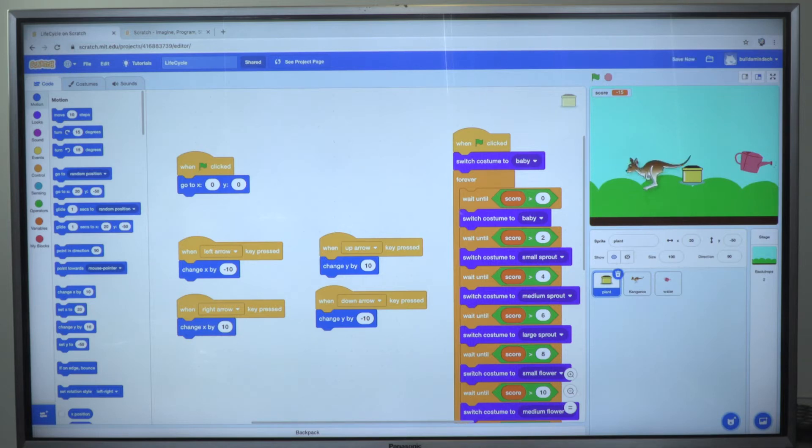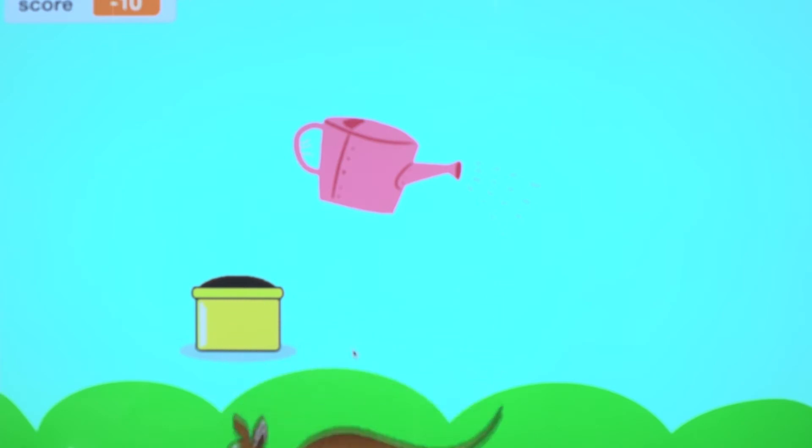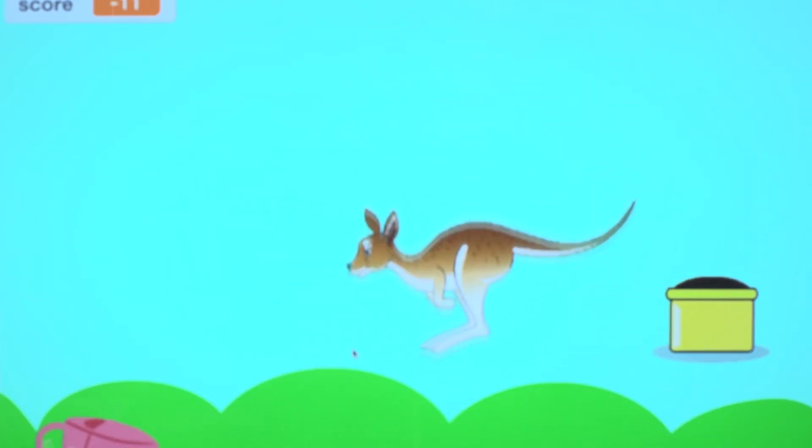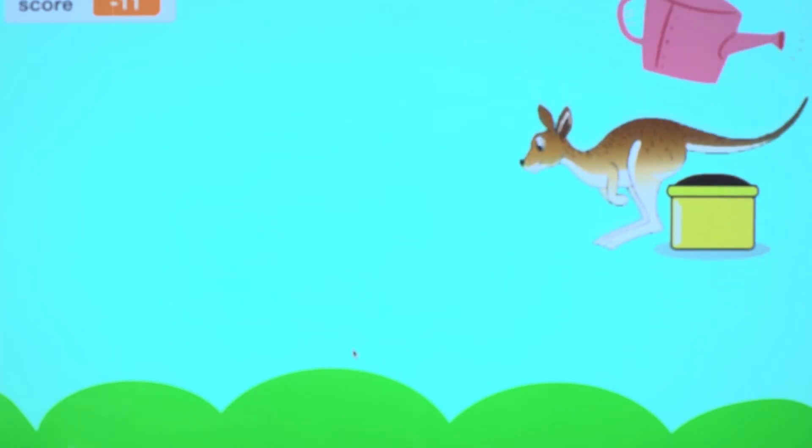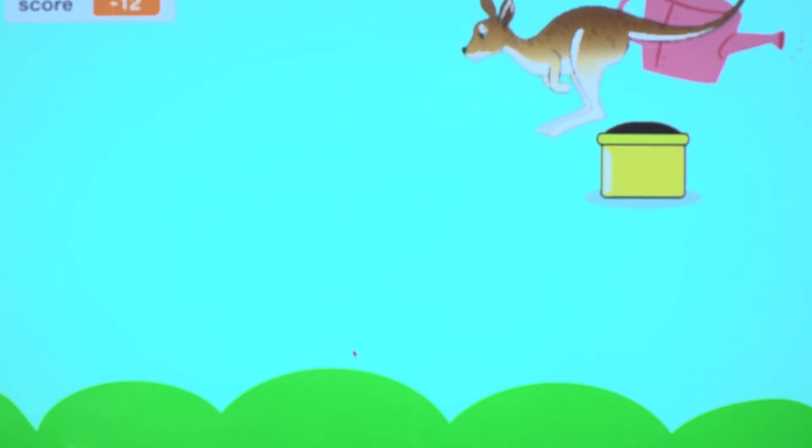In this particular game, we have three characters. We have our main character, which is our plant pot. We have a character that is, our characters are known as sprites, and our character over here is a watering can that our plant is trying to get to to get water. Every time he touches the watering can, he'll get a point.